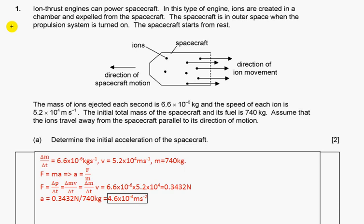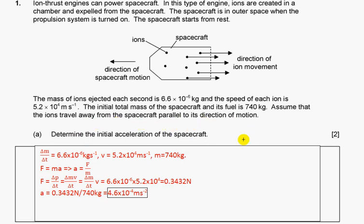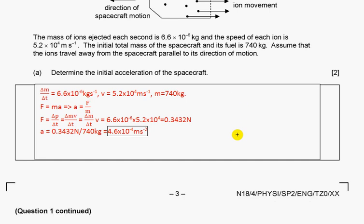Question one: Ion engines can power spacecraft. In this type of engine, ions are created in a chamber and expelled from the spacecraft. The spacecraft is in outer space when the propulsion system is turned on, starting from rest. Determine the initial acceleration of the spacecraft.